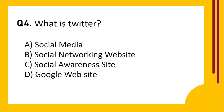Question number 4. What is Twitter? Option A: Social Media. Option B: Social Networking Website. Option C: Social Awareness Site. Option D: Google Website. The correct answer is B: Social Networking Website.